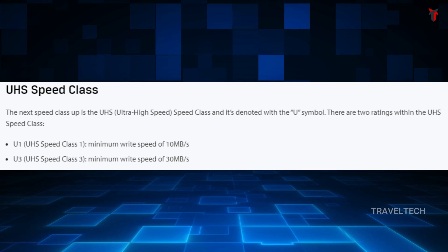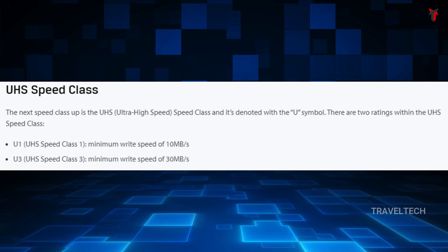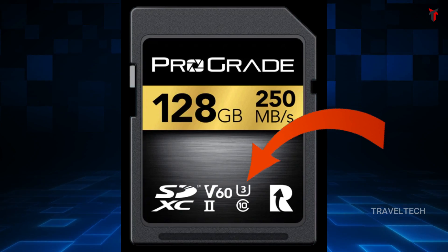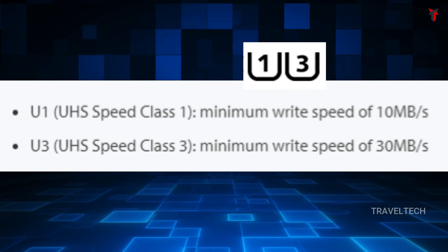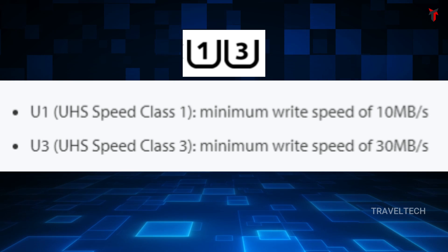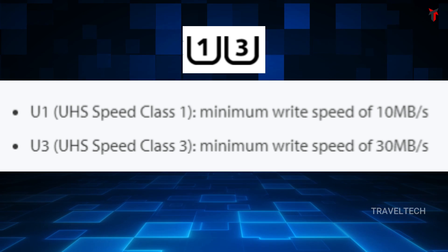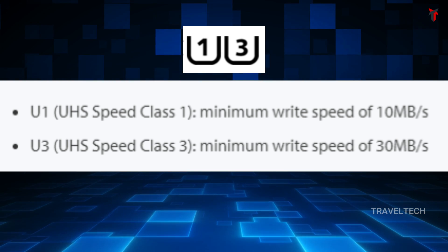The next speed class is the UHS speed class. UHS stands for Ultra High Speed and is denoted by the letter U. There are only two types: U1 and U3. U1 means UHS speed class 1, with a minimum write speed of 10 MB/s. U3 stands for UHS speed class 3, with a minimum write speed of 30 MB/s. The most commonly used is the U1 speed class.